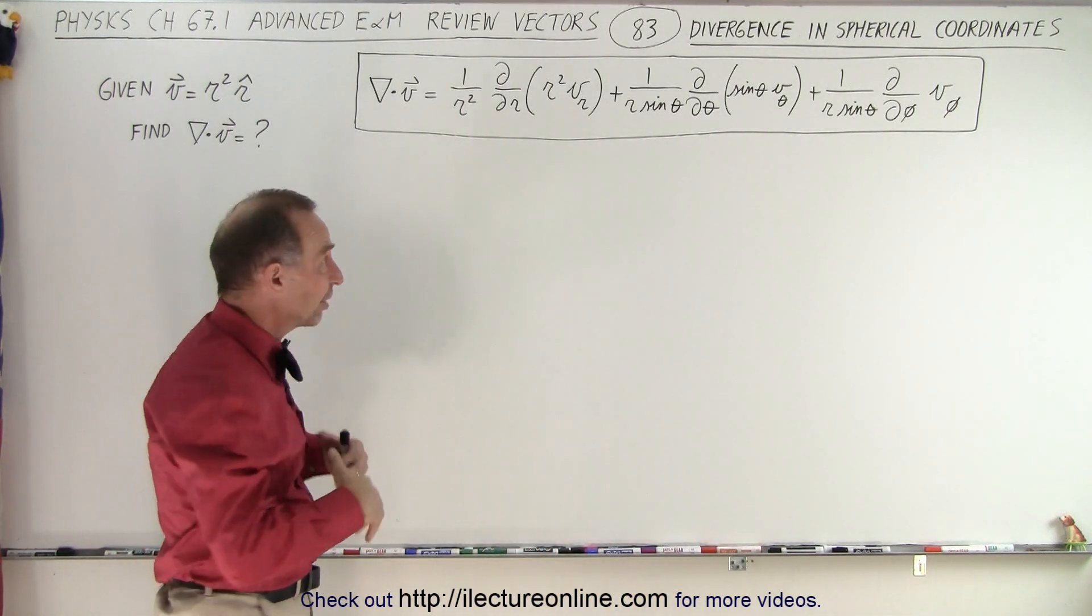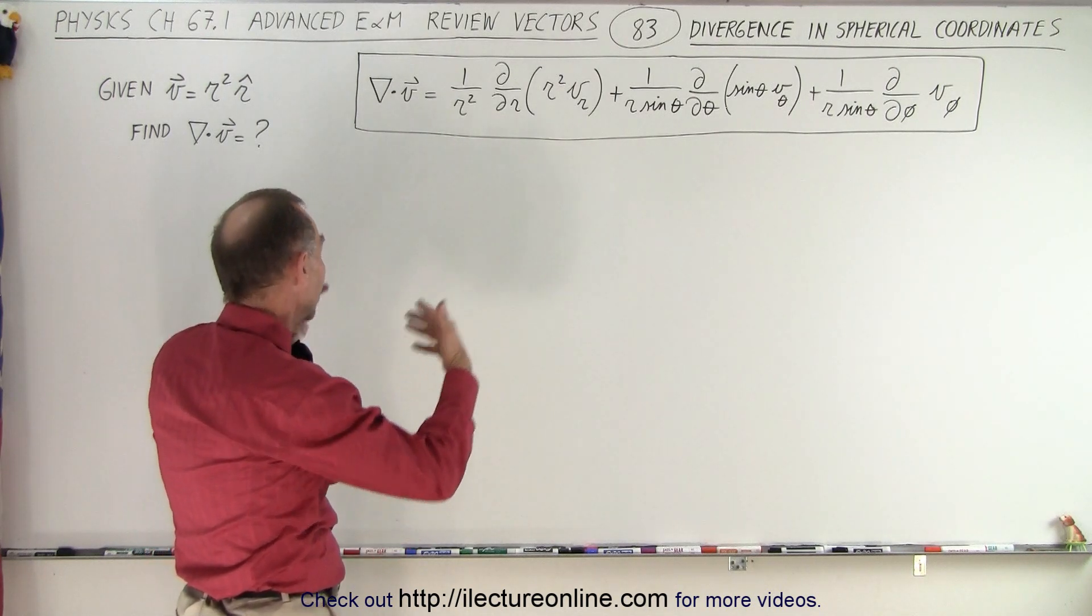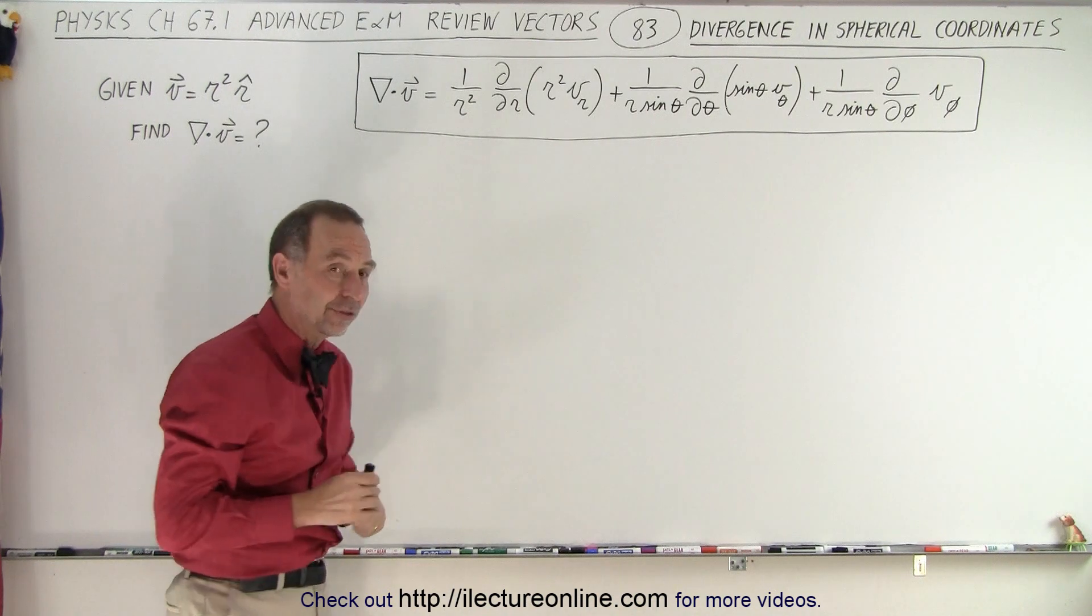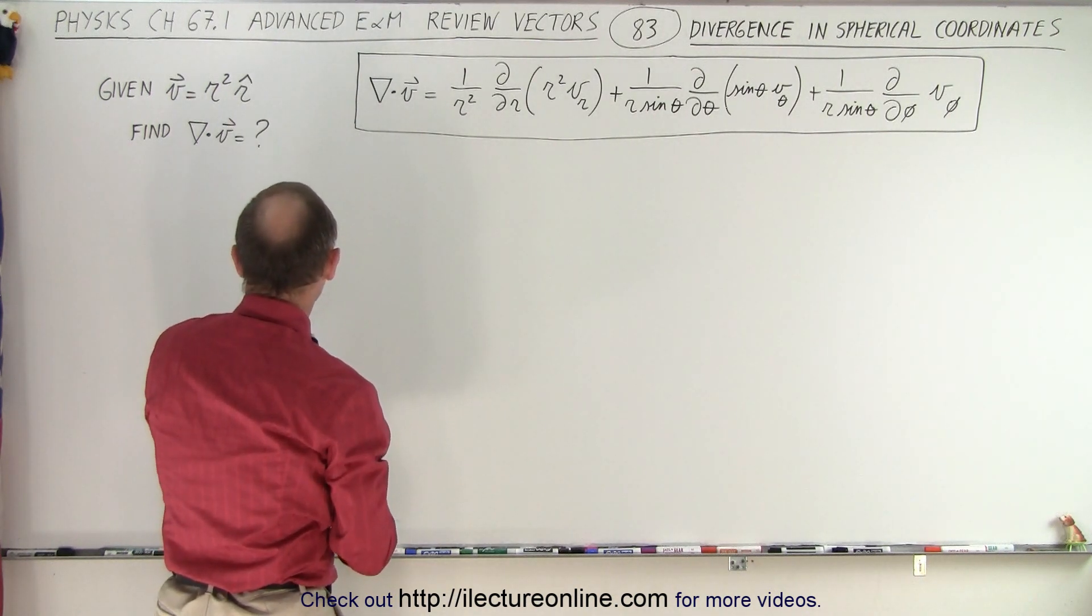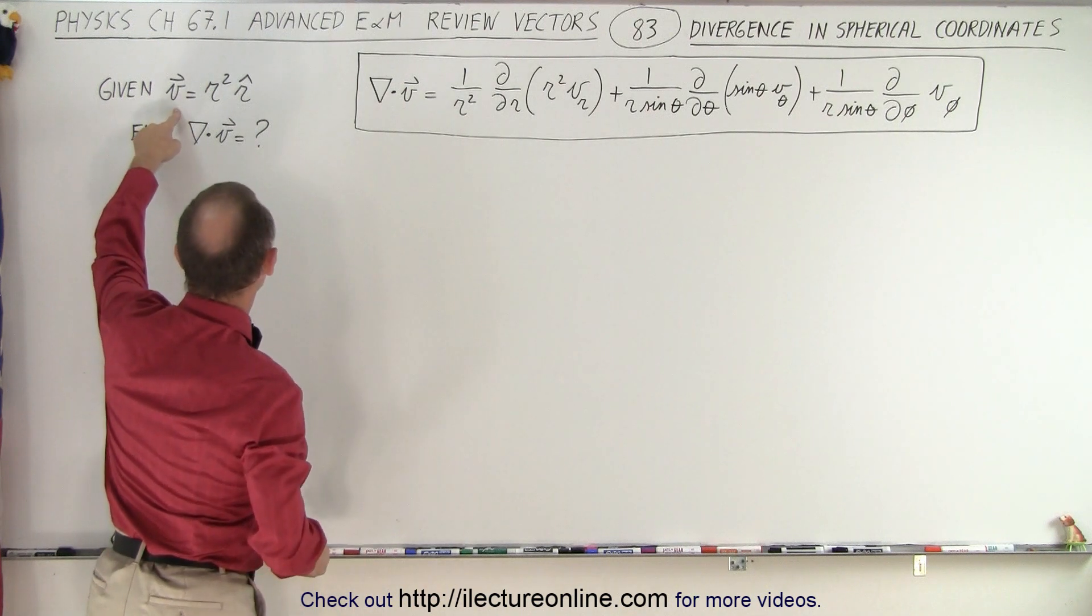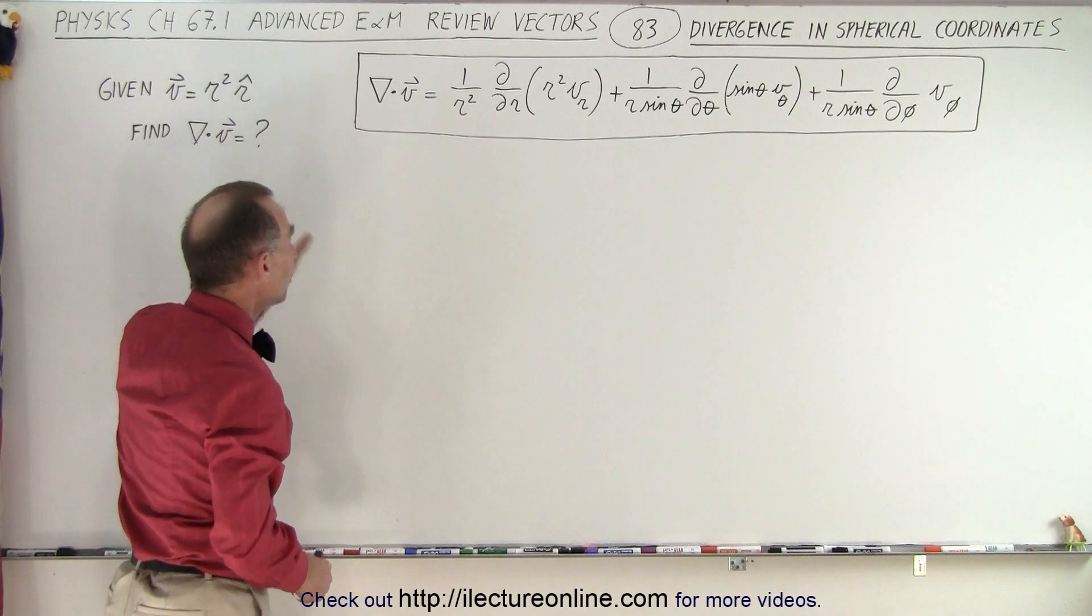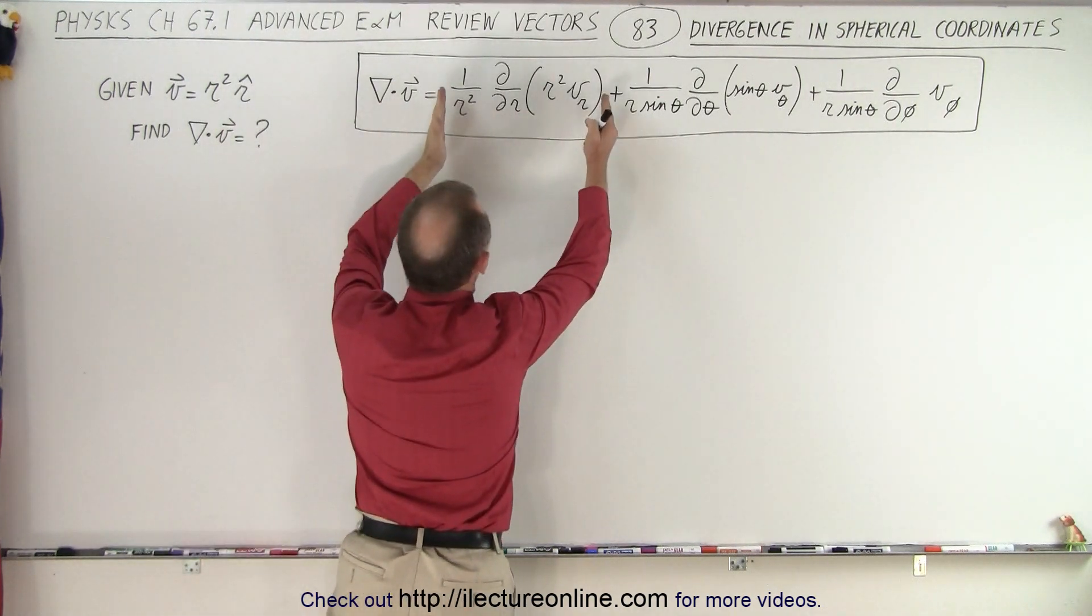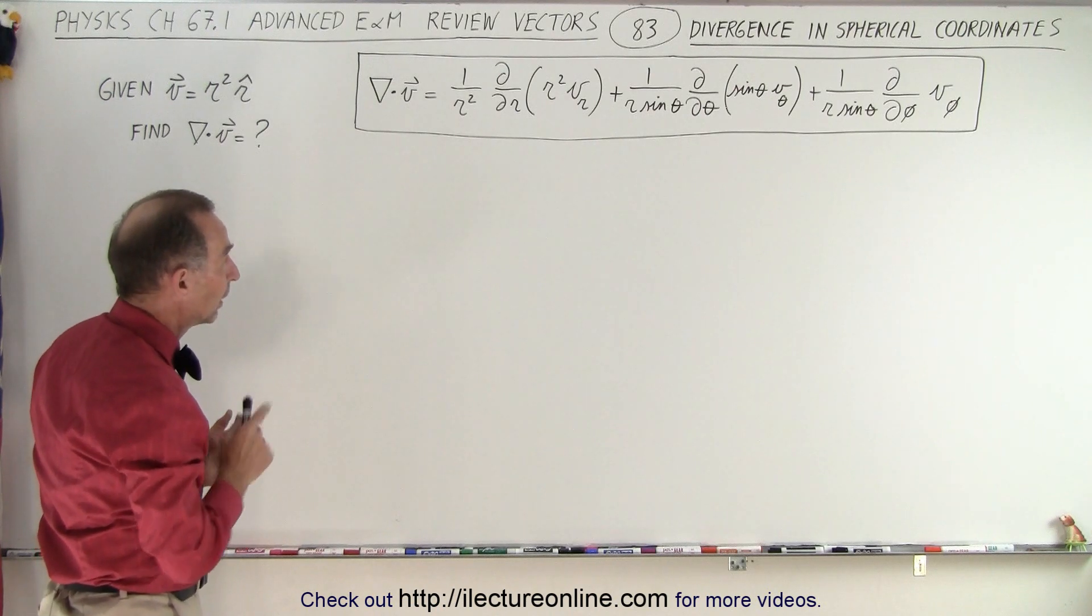So what we need to be careful of, because the most important thing is that you know how to take the divergence of vectors in spherical coordinates. You actually know how to use that equation. Now, we're going to do a simple example. So here we have the vector V equals r² times the r unit vector. There's only one component, so we only have to worry about this portion right here when we take the divergence of this simple example.